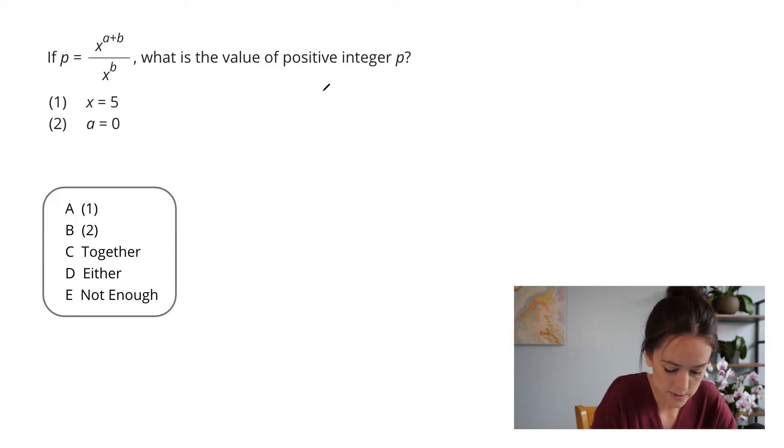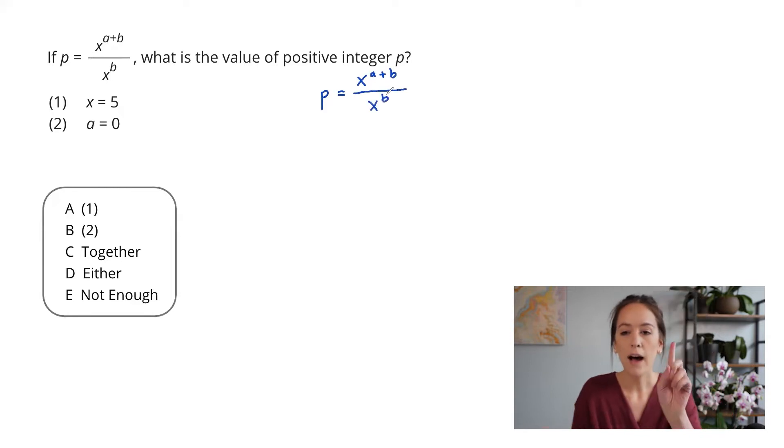So in this case, the GMAT has told us that p is x to the a plus b over x to the b. Now I know a secret about the GMAT, which is that the GMAT always gives you information in the least helpful way possible. So do not be fooled by x to the a plus b over x to the b. Actually sit back and ask yourself if there is any way that you can make this more simple.